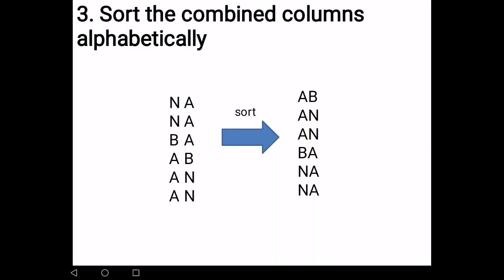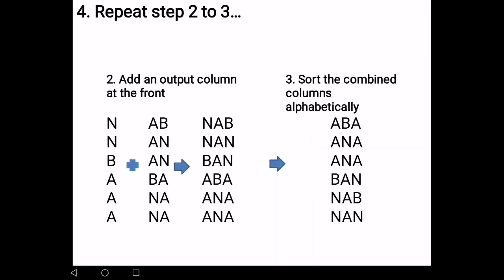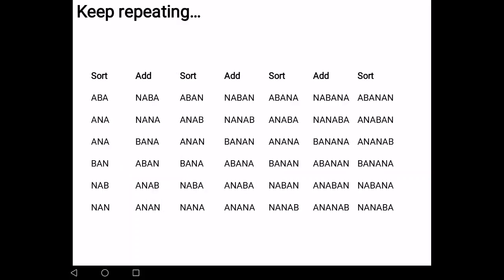The fourth step is to keep repeating step two and step three. Now, you have two columns from step two. And I repeat that. You add one more column that consists of output of BWT. You have three columns. You sort them. And you repeat them again. Sort, add, sort, add, sort, add, sort.